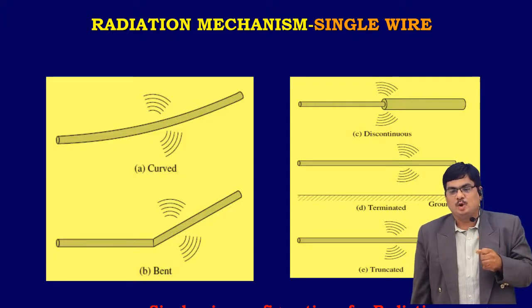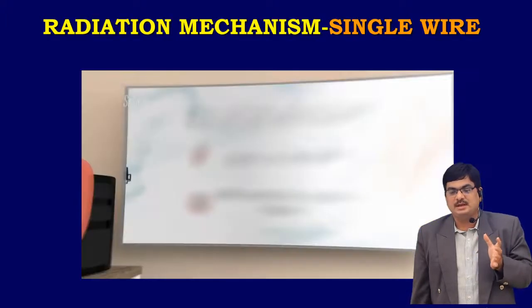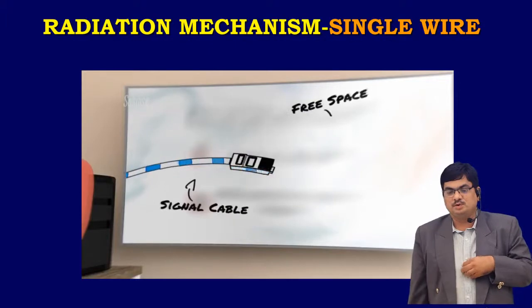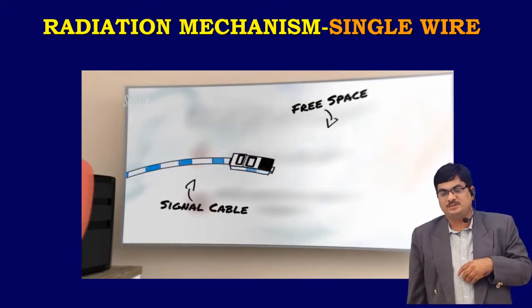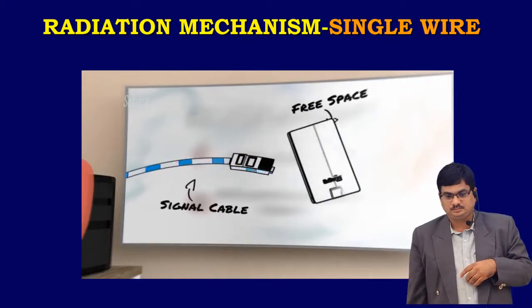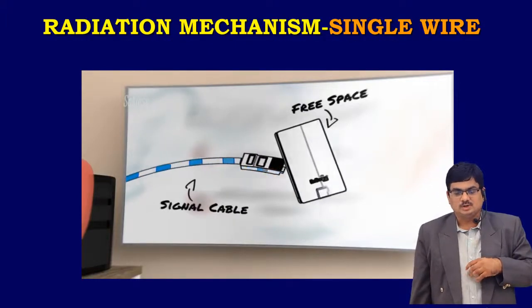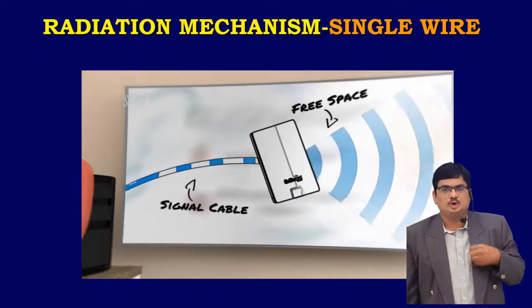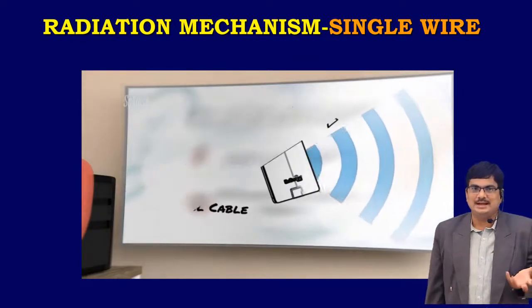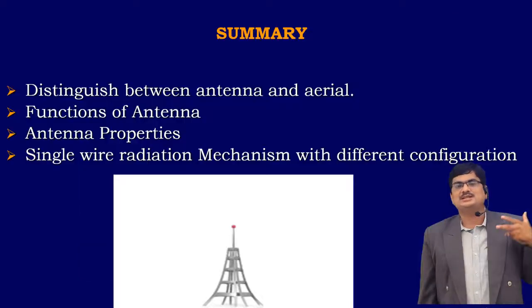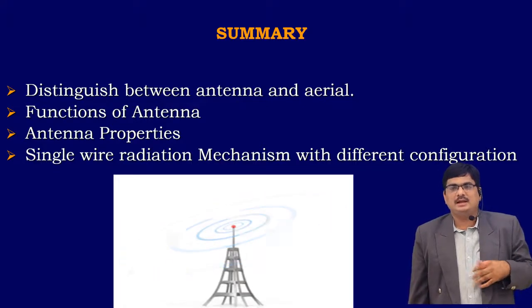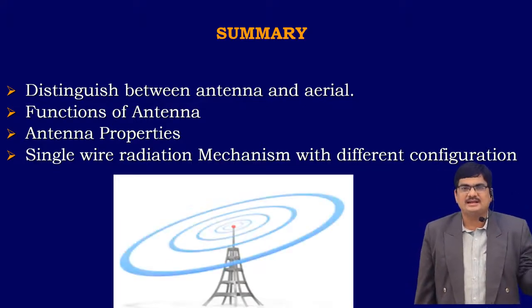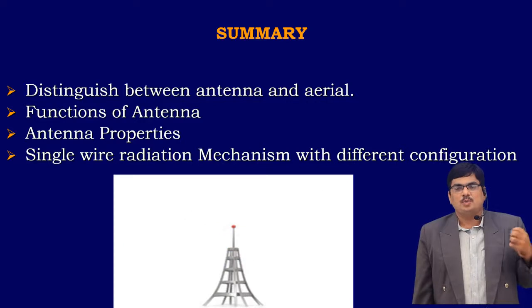This is the radiation mechanism — how a single wire or single cable transmits free waves to mobile phones or free space. To summarize: we covered what an antenna is, what its distribution is, what are the properties of an antenna, and what are the functions of an antenna.